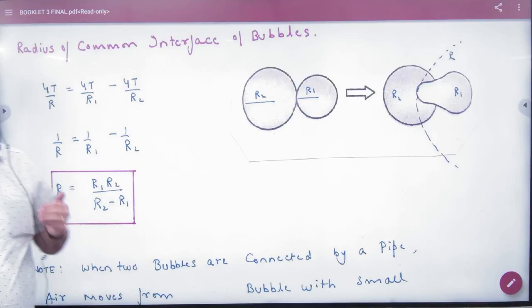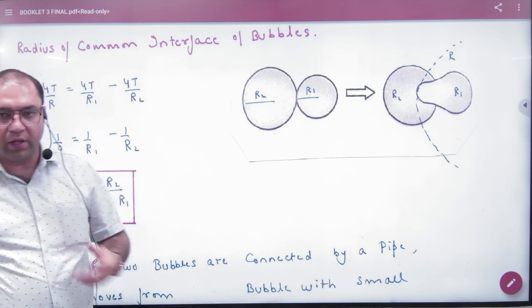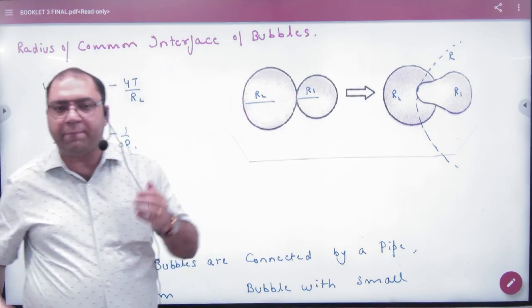The radius of common interface of bubbles. It's told that if you have two bubbles, one bubble and one bubble, and both bubbles are in contact.